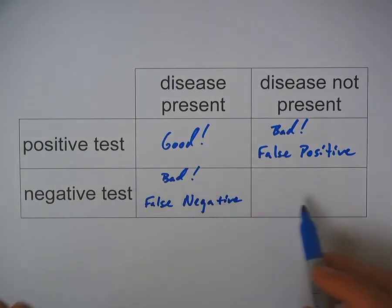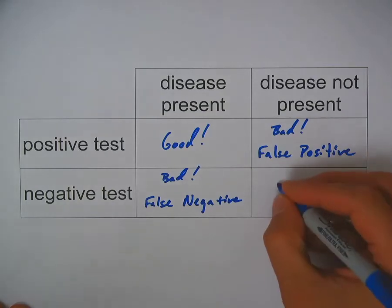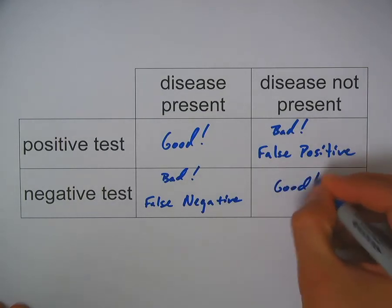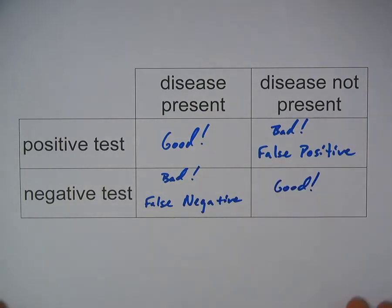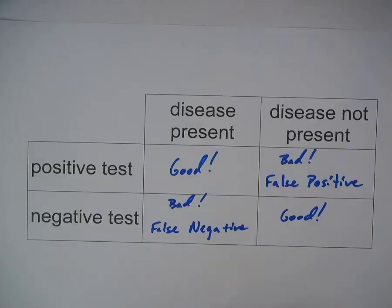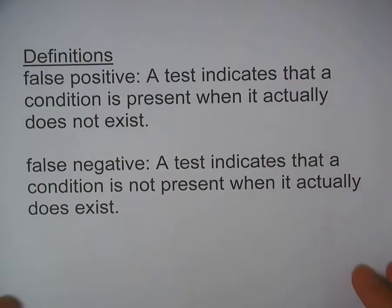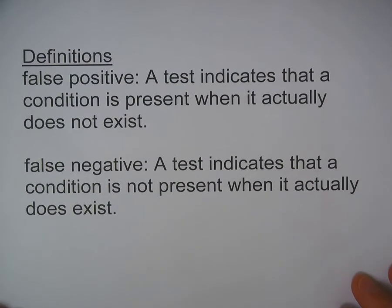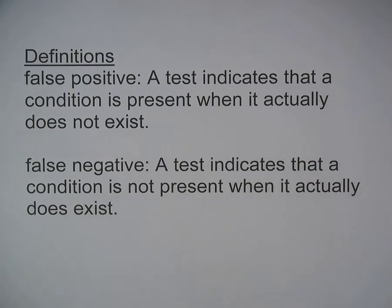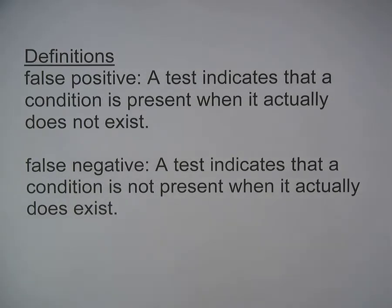Finally, a negative test when the disease is not present — that's also a good outcome. To formally define these terms: a false positive is when a test indicates that a condition is present when it actually does not exist, and a false negative is when a test indicates that a condition is not present when it actually does exist.